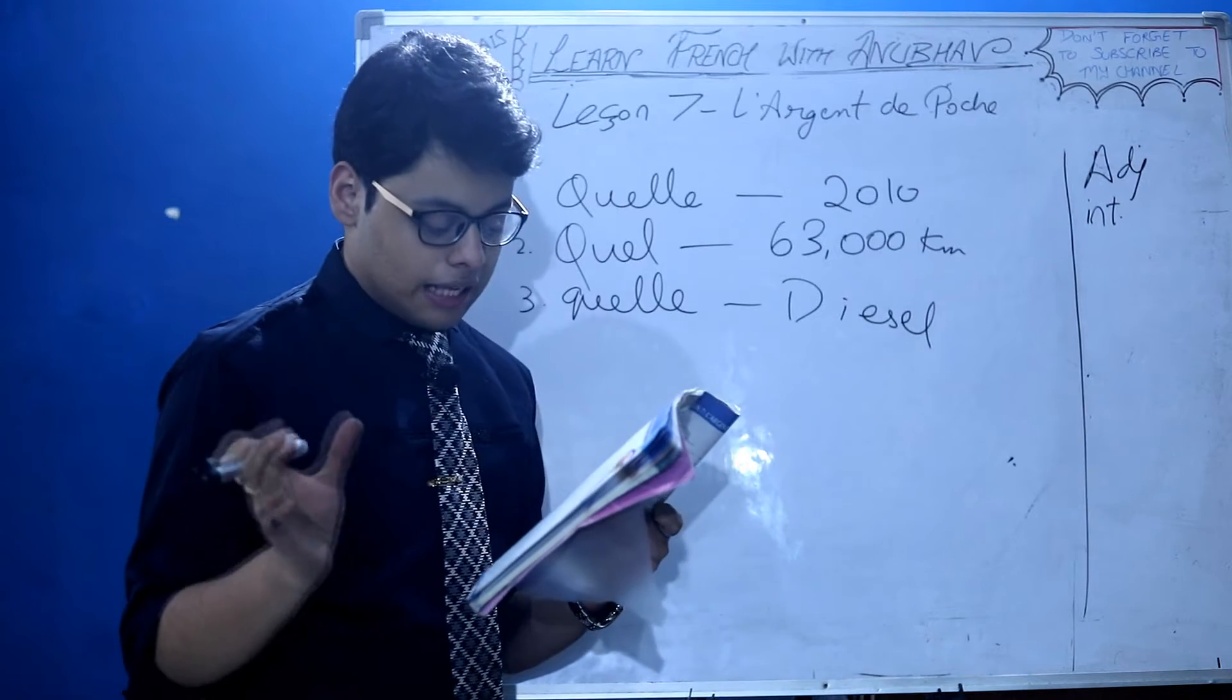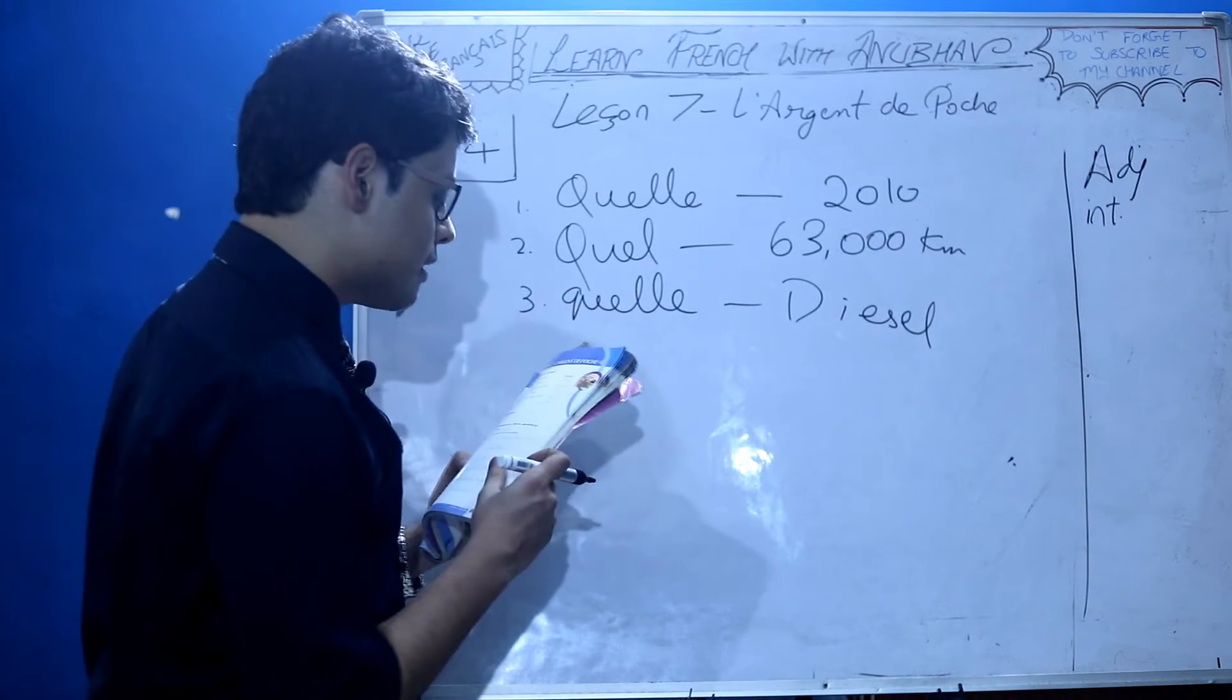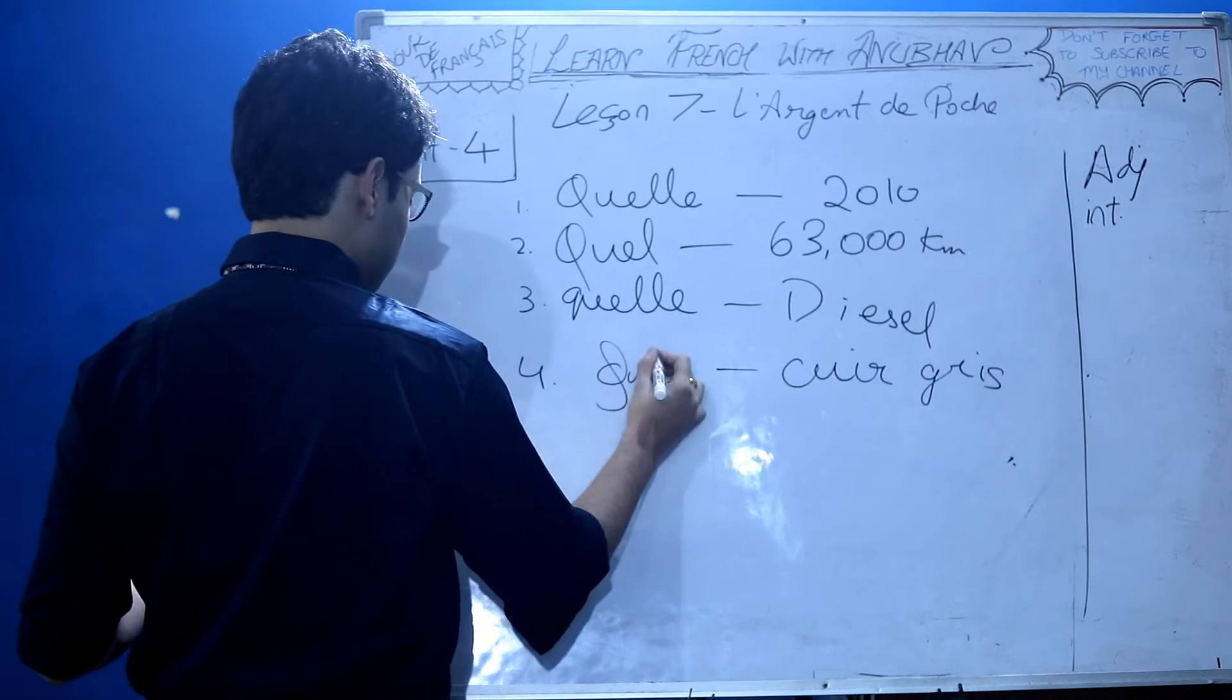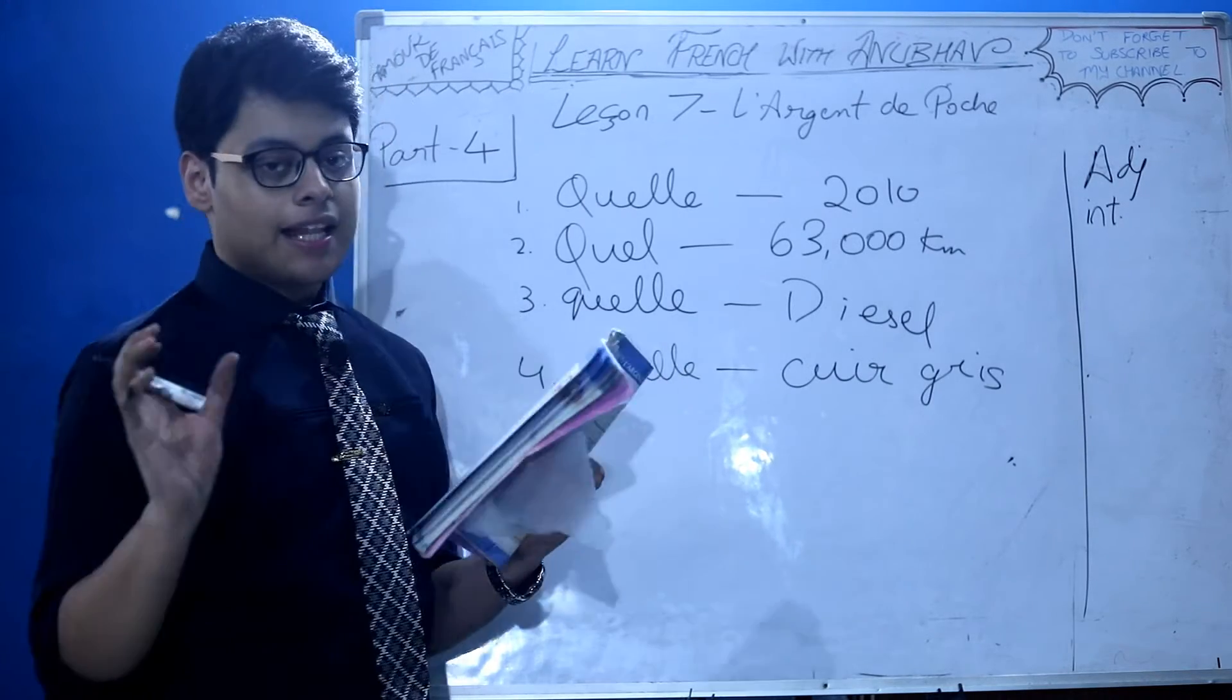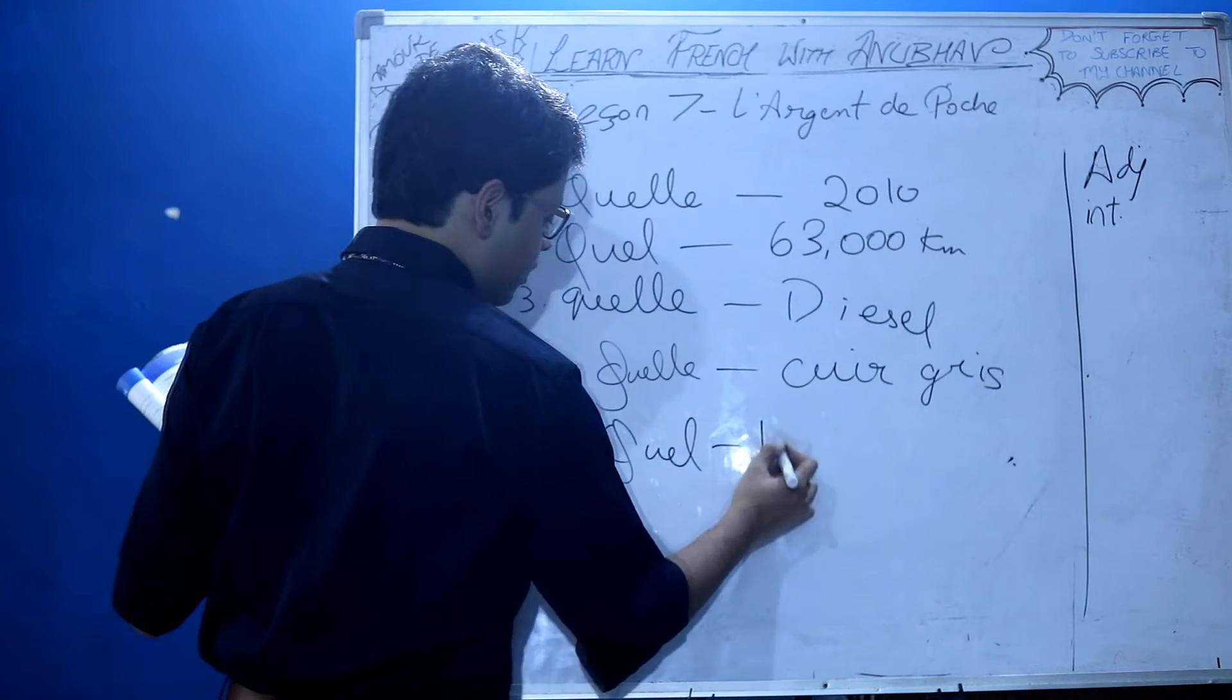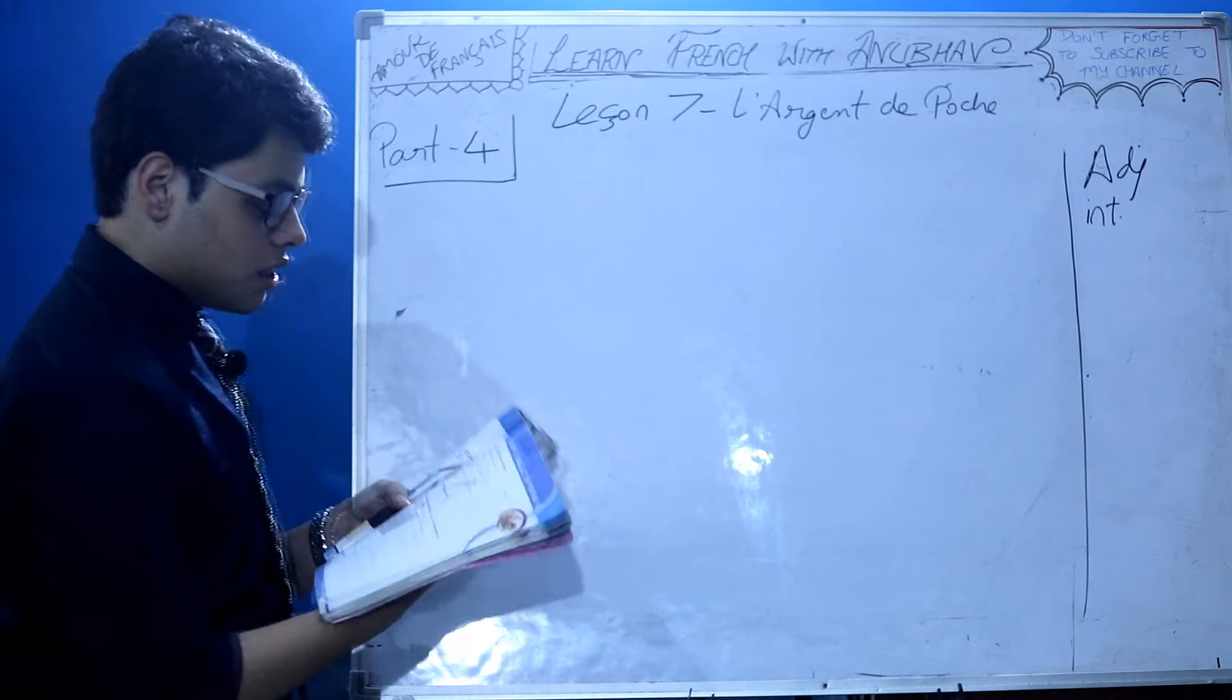Fifth: Quel est le prix? Prix is masculine singular, so quel. Answer: 17,500 euros or dix-sept mille cinq cent euros. Sixth: Je révise ce que je viens d'apprendre - I revise what I just learned.